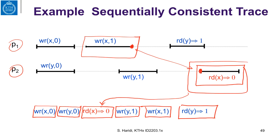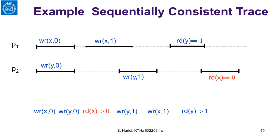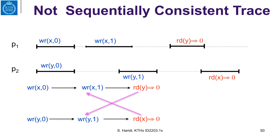If we assign 1 here and 0 here, we also get a sequentially consistent execution with the same reasoning. Now let us look at an execution which is not sequentially consistent. This is an execution where both the read of Y and the read of X return value 0. This execution cannot be put in a single line.